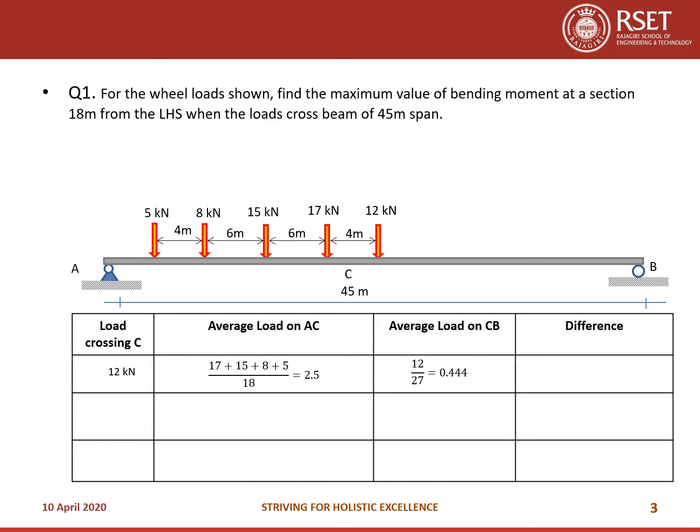The average load on CB is 12 divided by the length of BC, which is 27, giving 0.44. The difference is 2.056.